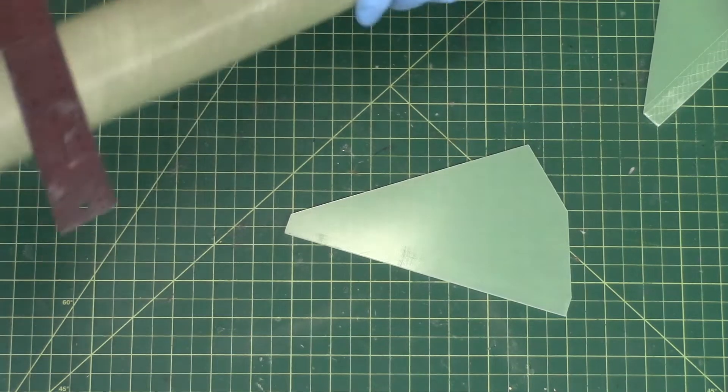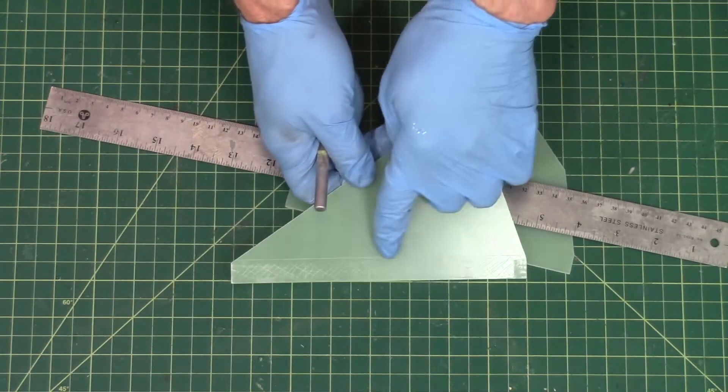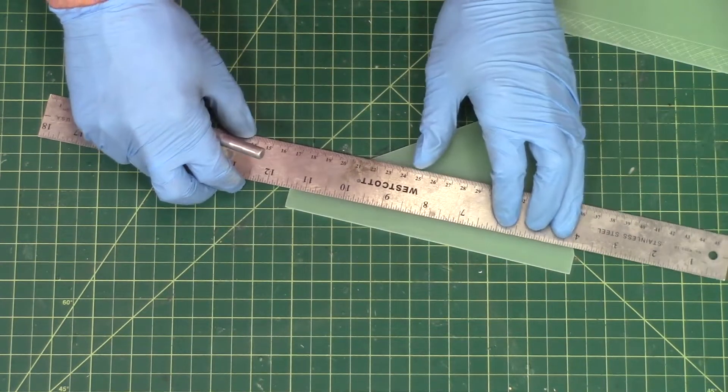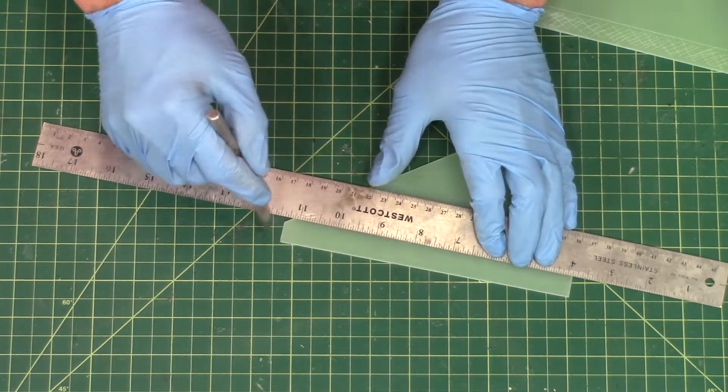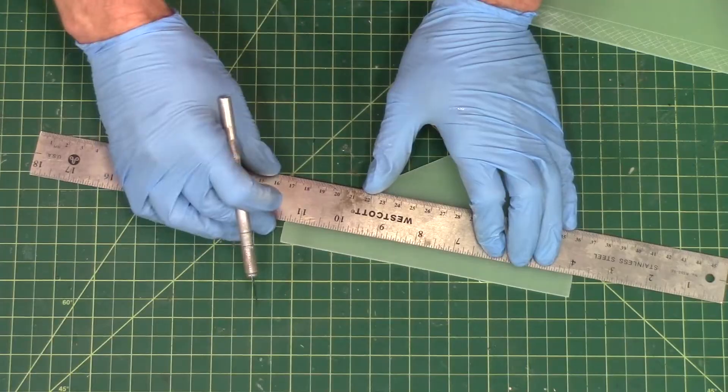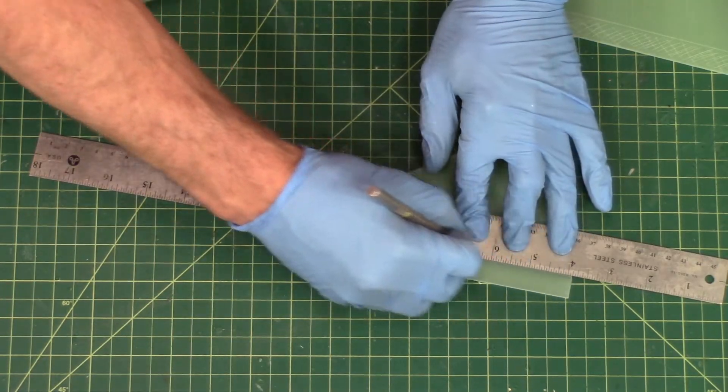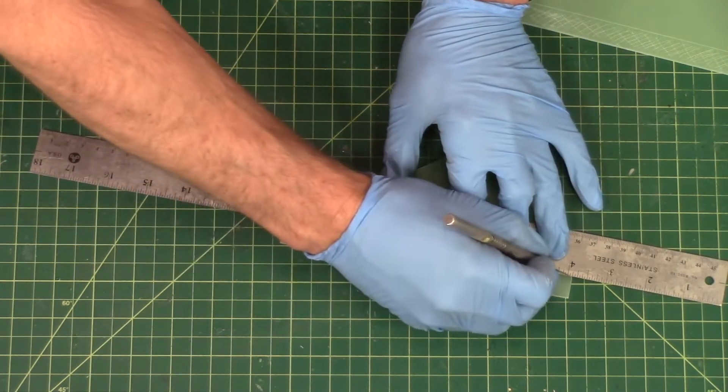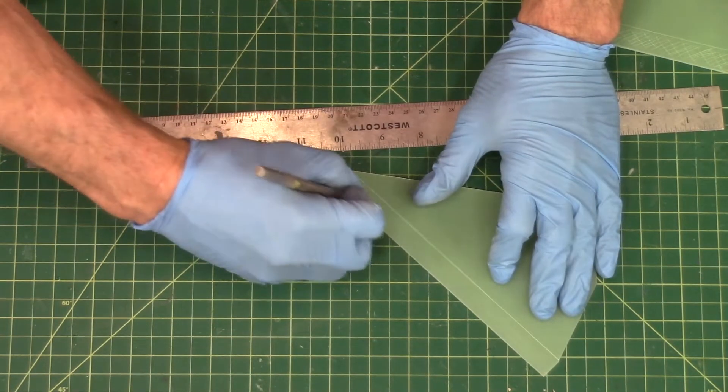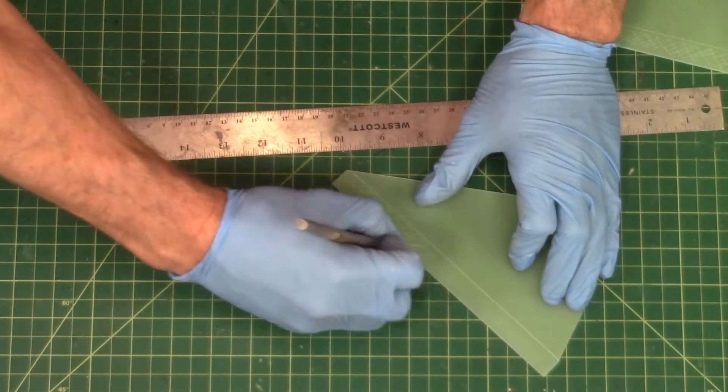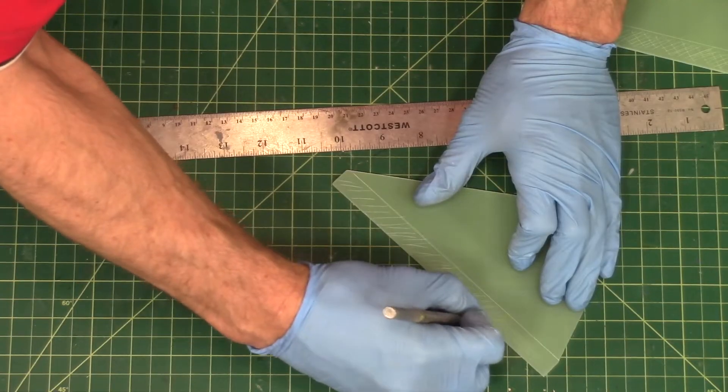Mach 1 recommends using a hobby knife and scoring it like this one here. Basically you can take a ruler, line it up with the corner here, and just make a score line like that. And then just do cross hatches along the length of it like this. This will give the epoxy something to grip onto.